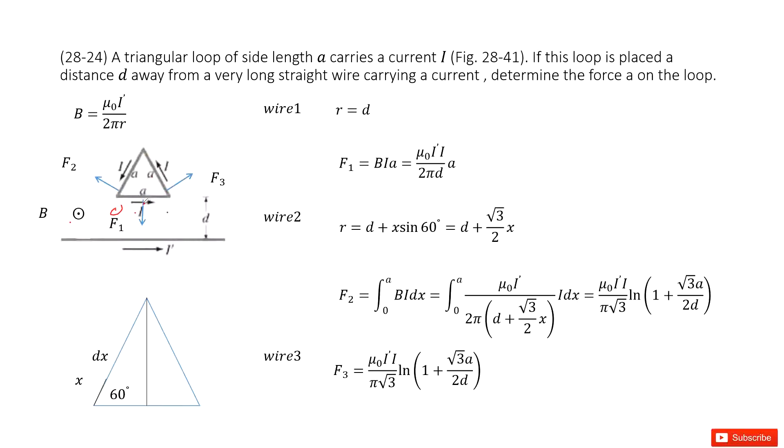We now look at wire1. For wire1, we can determine the magnetic field B by the bottom wire as B = μ₀I/(2πr). r is the distance from the point to the bottom wire. For wire1, the distance from wire1 to the bottom wire is just d, so r = d. F1 by Ampere's rule is B·I·A. Input r inside, we get the answer there.